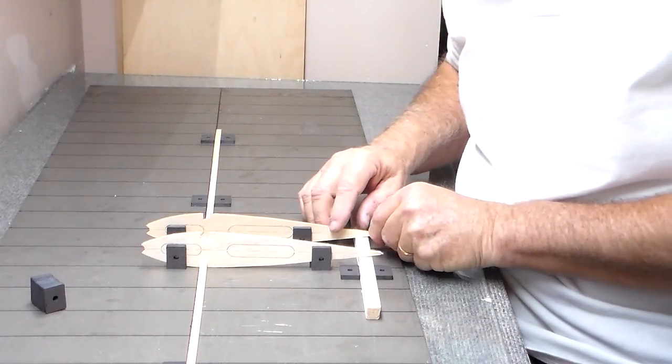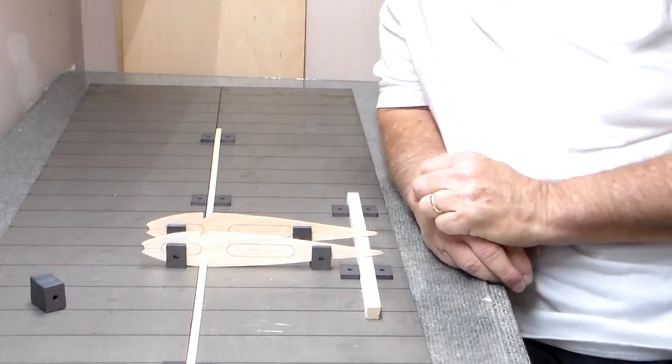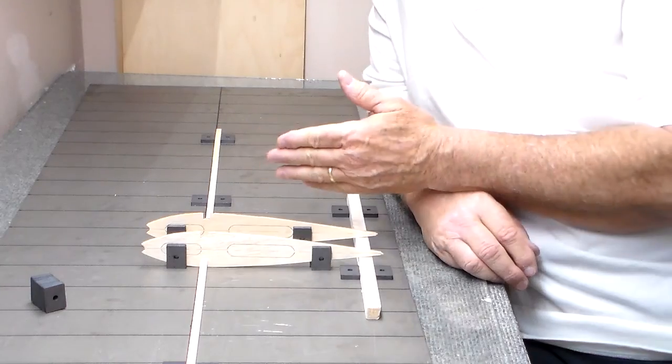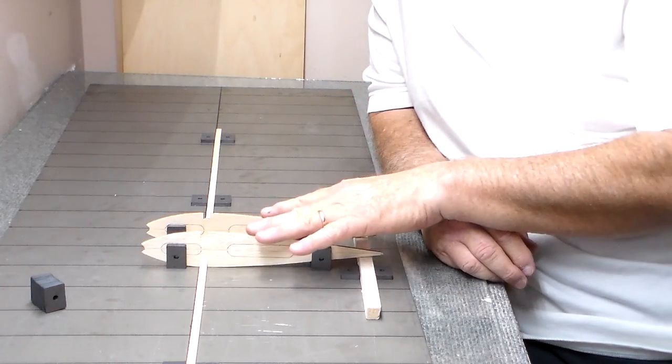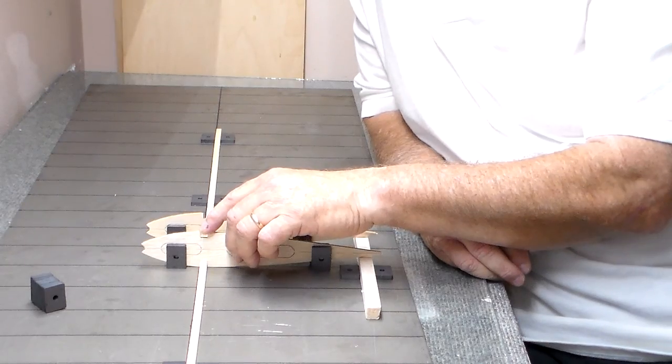So once you do that, you go all the way up and down, you've got your wing and your ribs set in the proper place. Drop your top spar in just like the bottom spar.